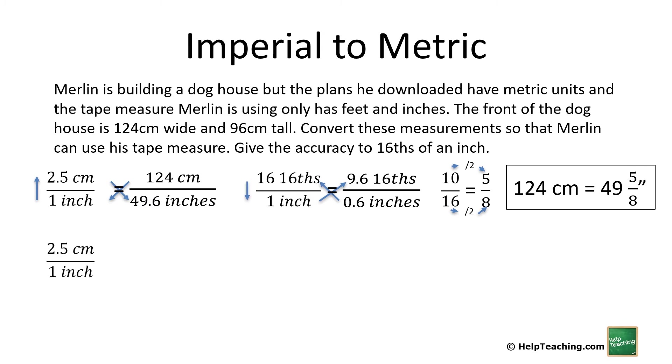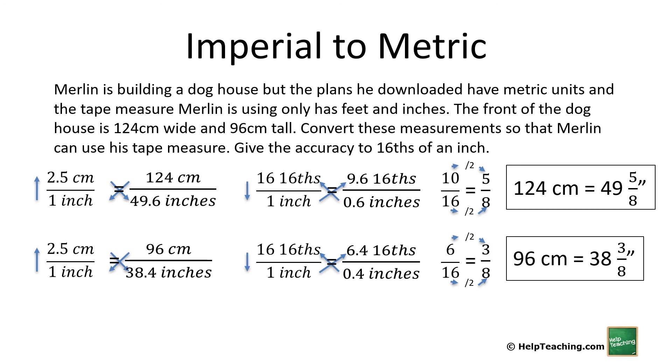Let's do this again for the height. 2.5 centimeters is 1 inch. This time we are looking for the equivalent of 96 centimeters. So 96 times 1 divided by 2.5 gives us 38.4 inches. Let's take the 0.4 and convert it to sixteenths. We know 16 sixteenths in one inch, and we are looking for 0.4 inches. 0.4 times 16 divided by 1 gives us 6.4. We round that and get 6 sixteenths. Again, these are both divisible by 2, so we simplify to 3/8. So 96 centimeters is 38 and 3/8 inches.